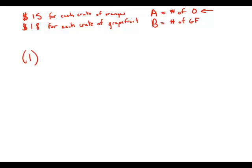Let's slow down and translate that into algebra. The number of crates of oranges, A, equals 20 more than, 20 plus, twice the number, so two times the number of grapefruit.